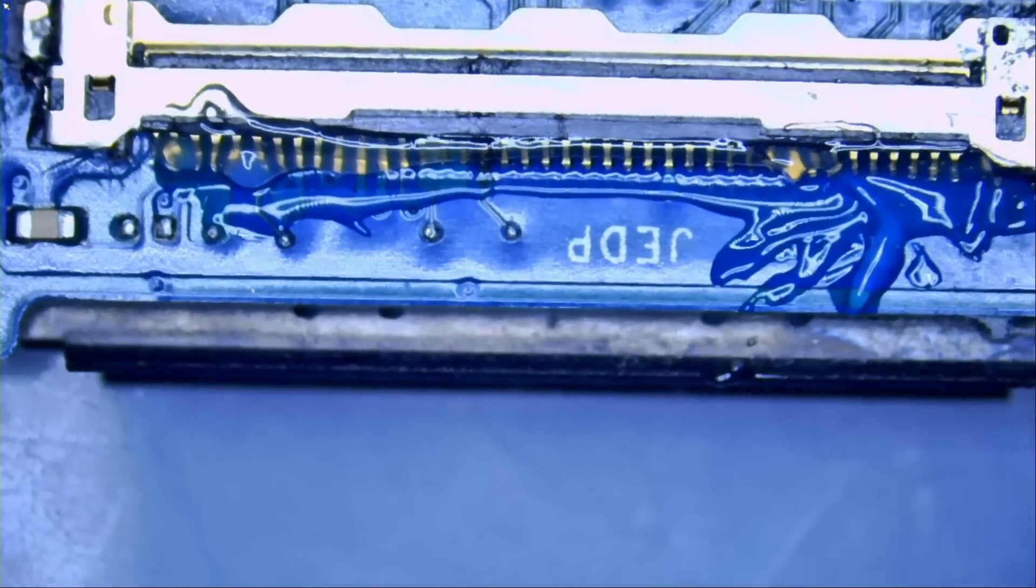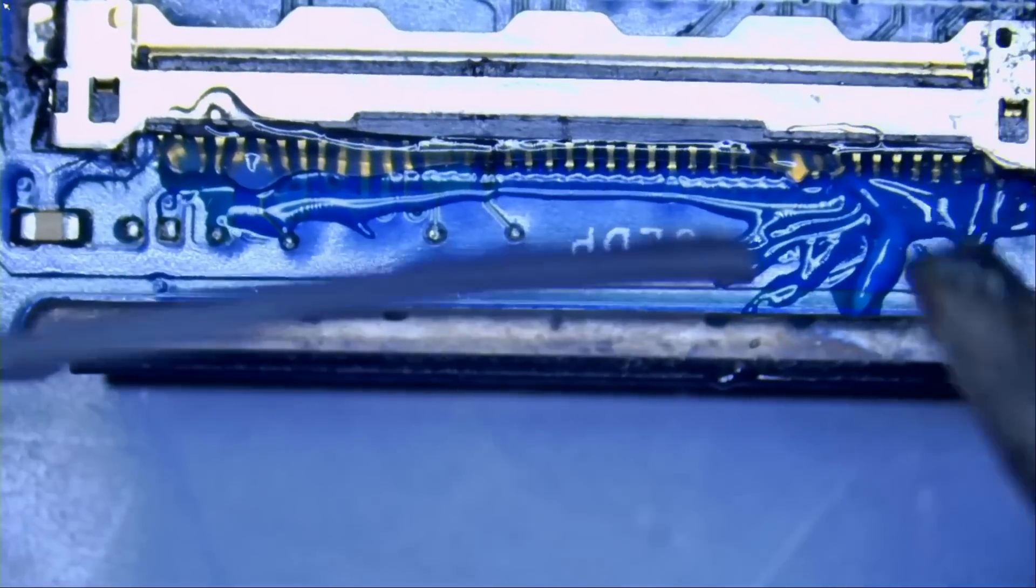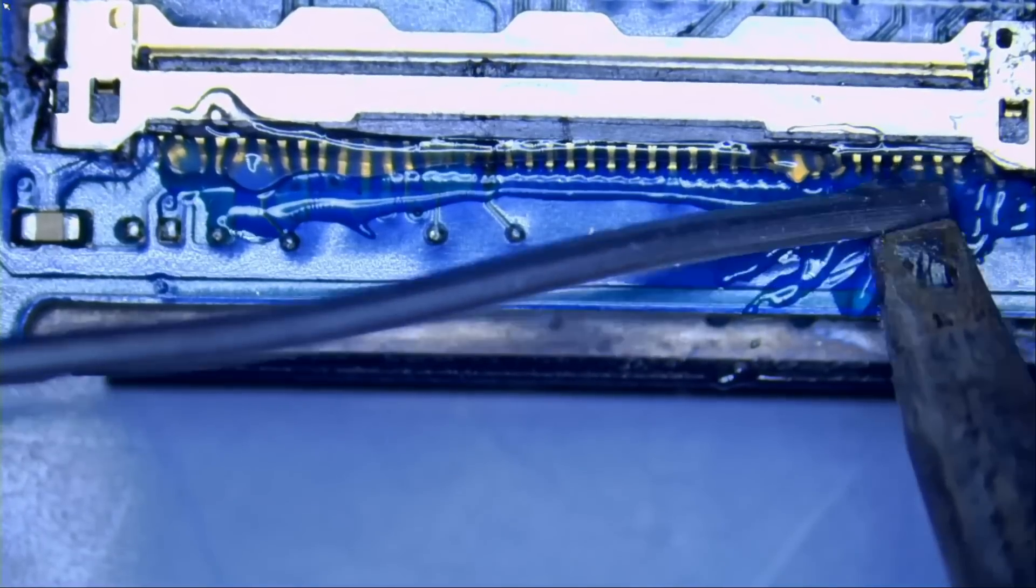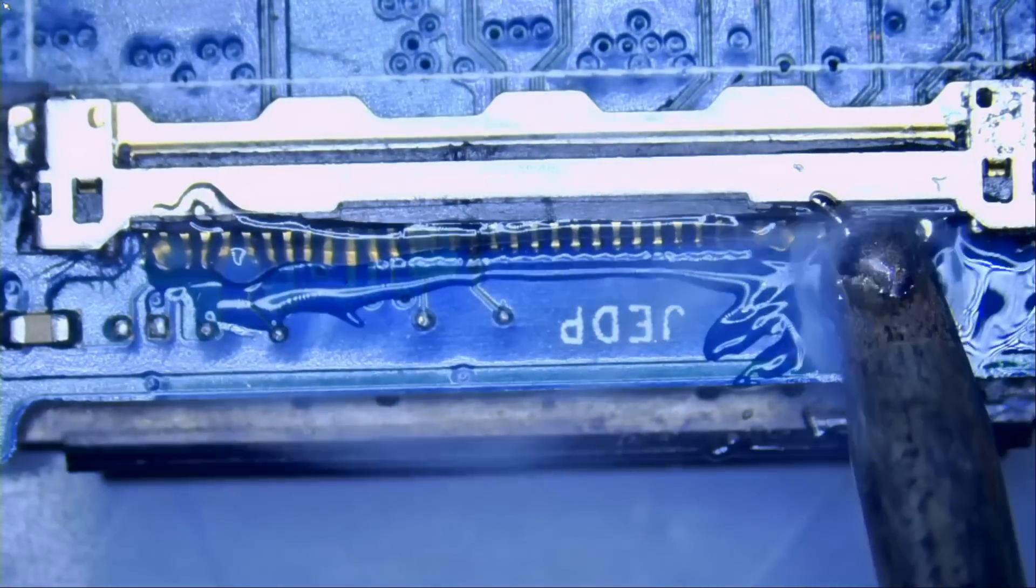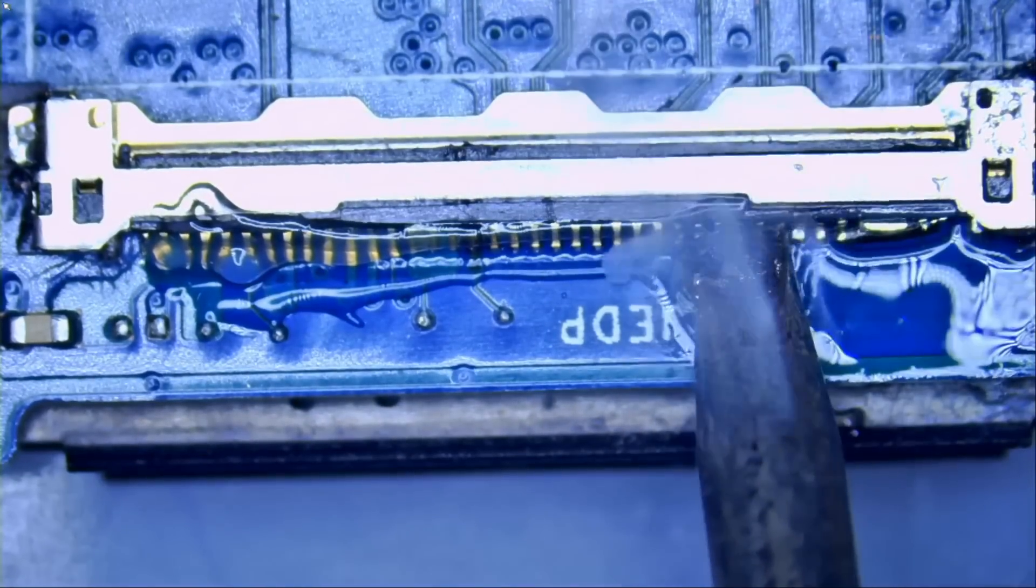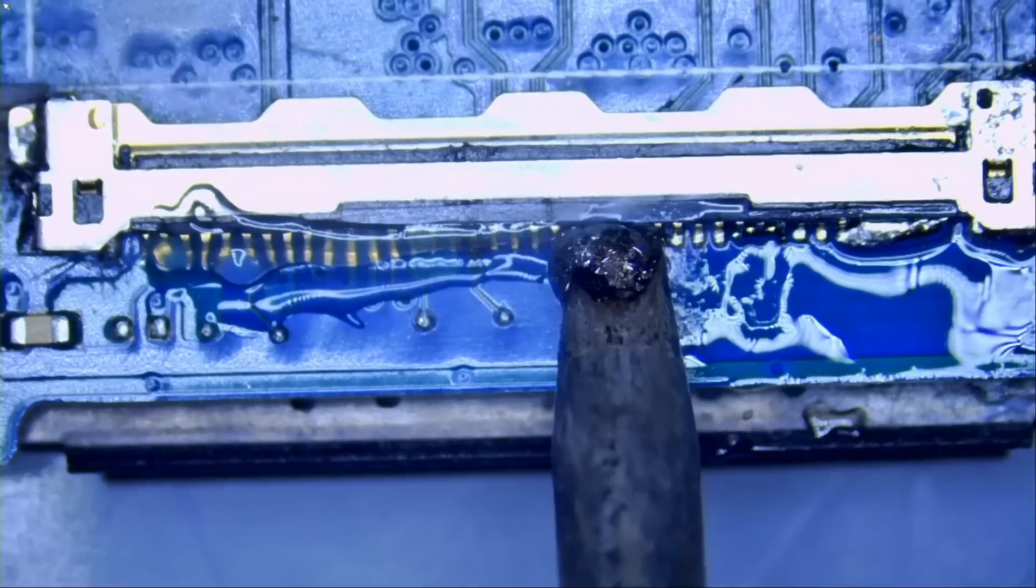We need to have our fume extractor on, of course. You do not want to be breathing those fumes. And that's it for low melt. I just applied a tiny bit on the tip.